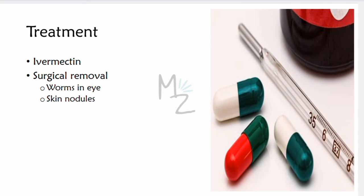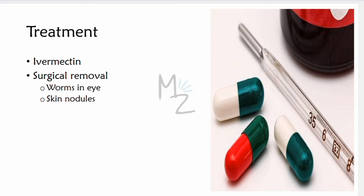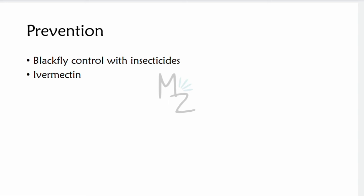Treatment: Ivermectin is effective against microfilariae but not adults. Suramin kills adult worms but is quite toxic and is used particularly in those with eye disease. Skin nodules can be removed surgically, and worms in the eyes can also be removed surgically, but new nodules can develop, so a surgical cure is unlikely in endemic areas. Prevention involves control of blackflies with insecticides, and Ivermectin also prevents further spread of the disease.